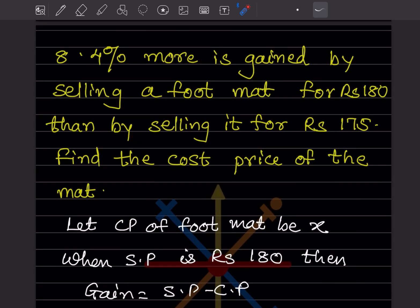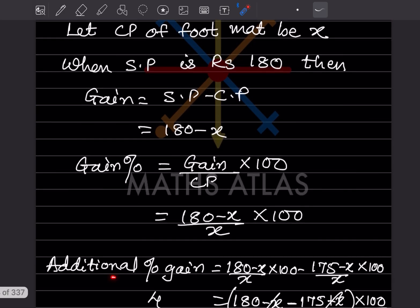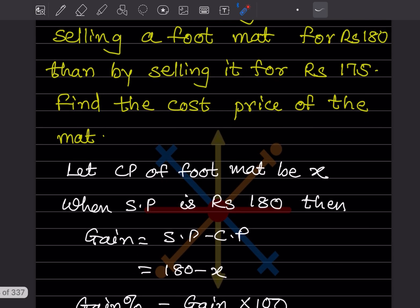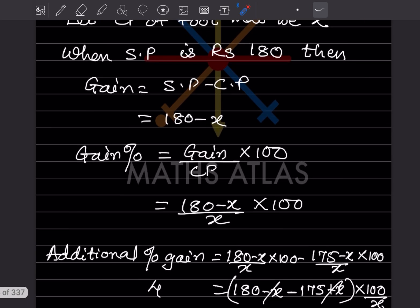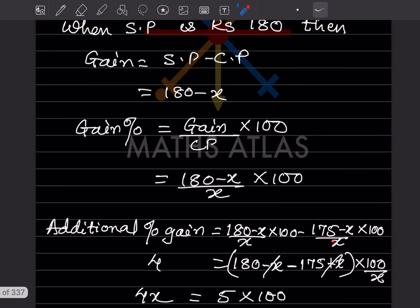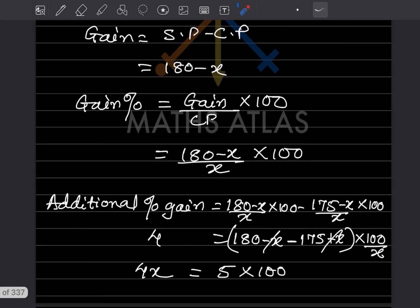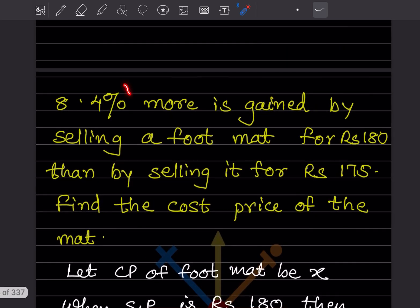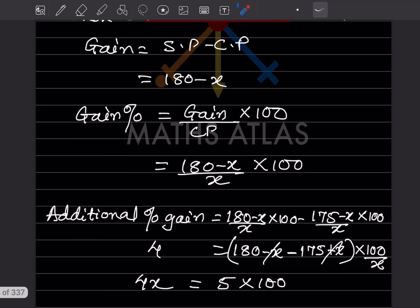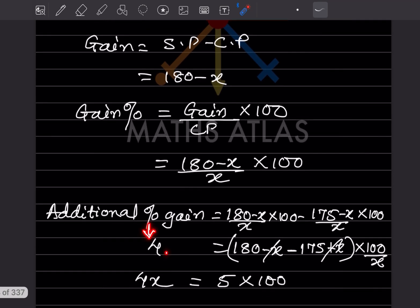Now for the second case, selling it for ₹175: the gain percentage would similarly be (175 − X) / X × 100. The difference between these two gain percentages is given as 4 percent. So we write: (180 − X)/X × 100 minus (175 − X)/X × 100 = 4.